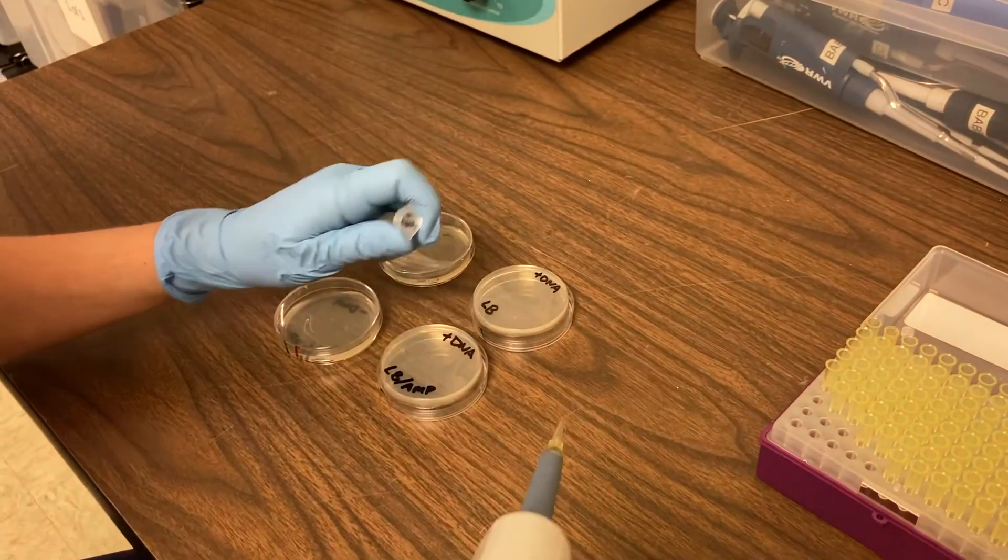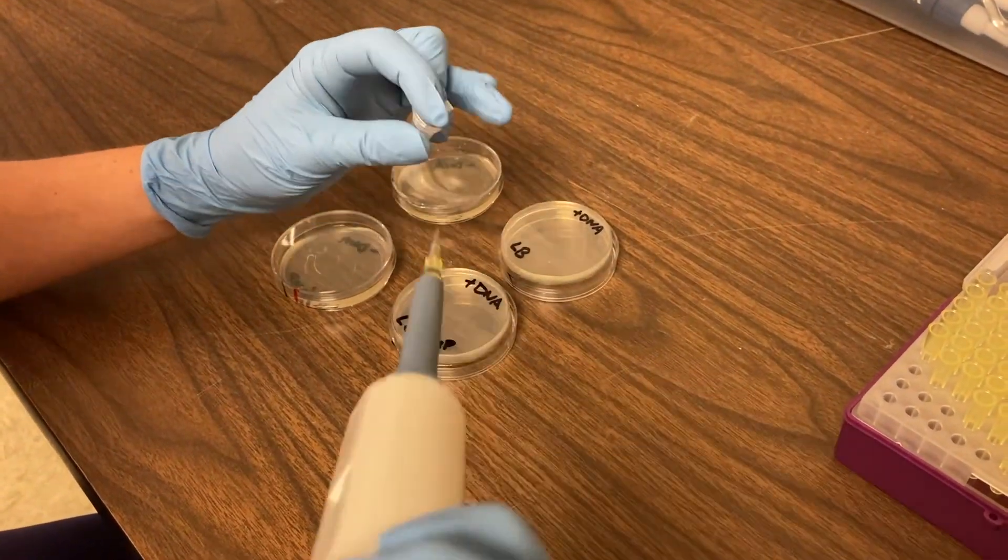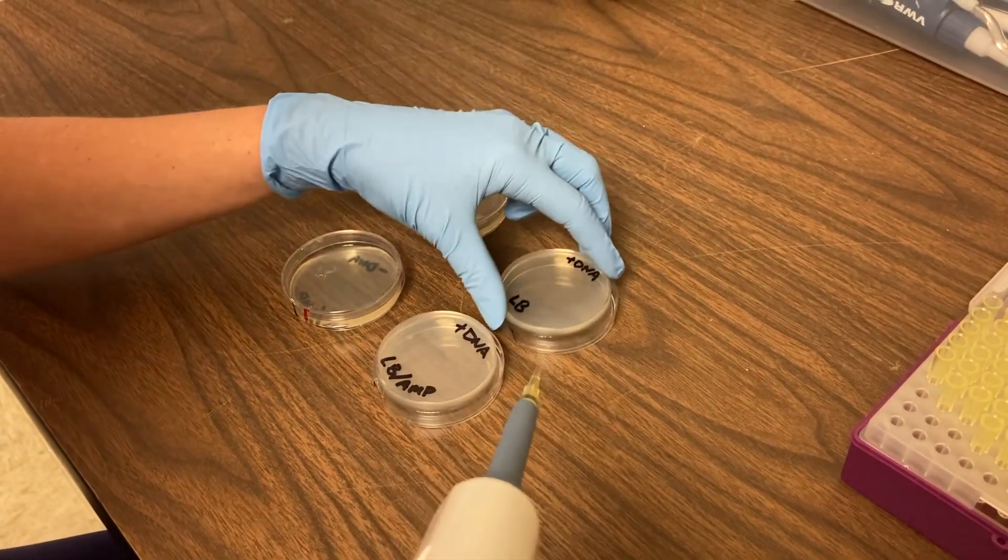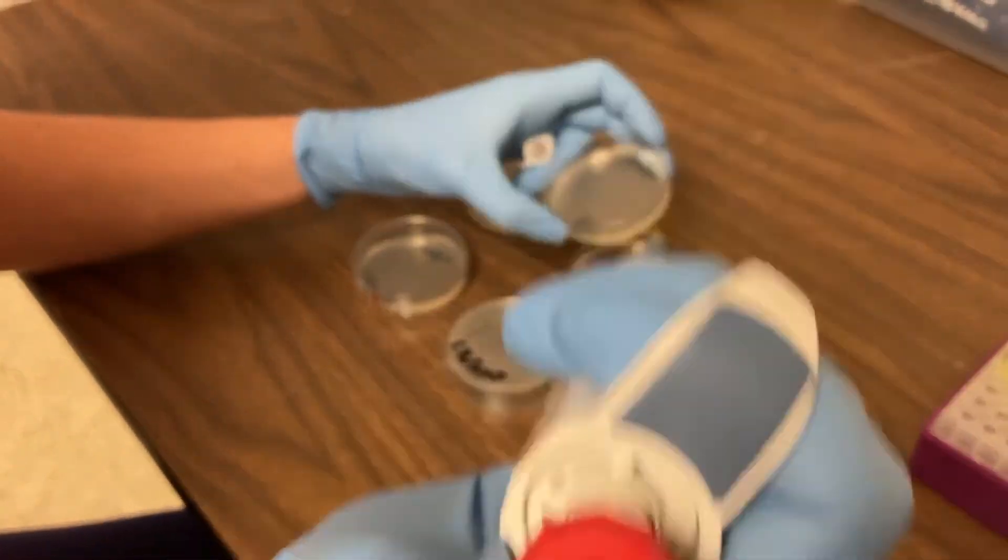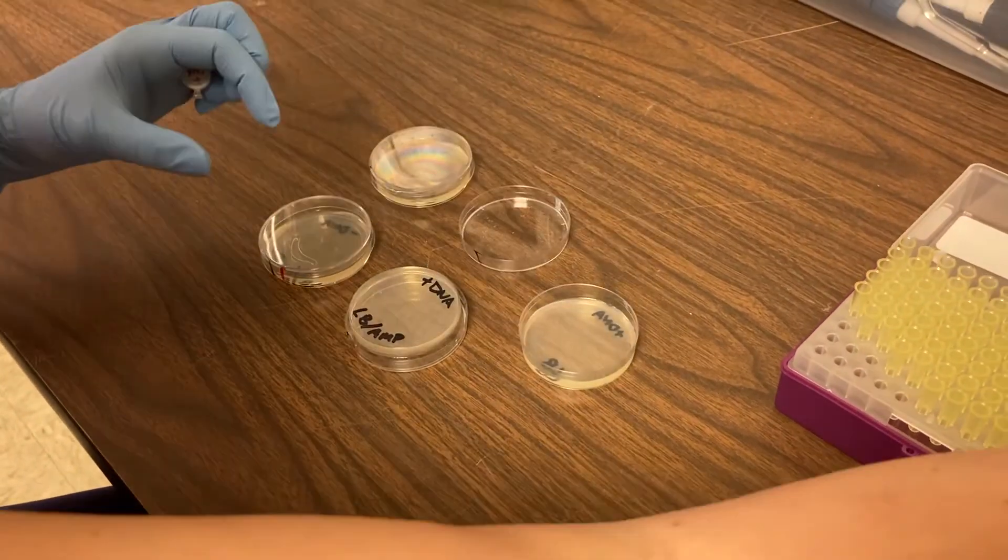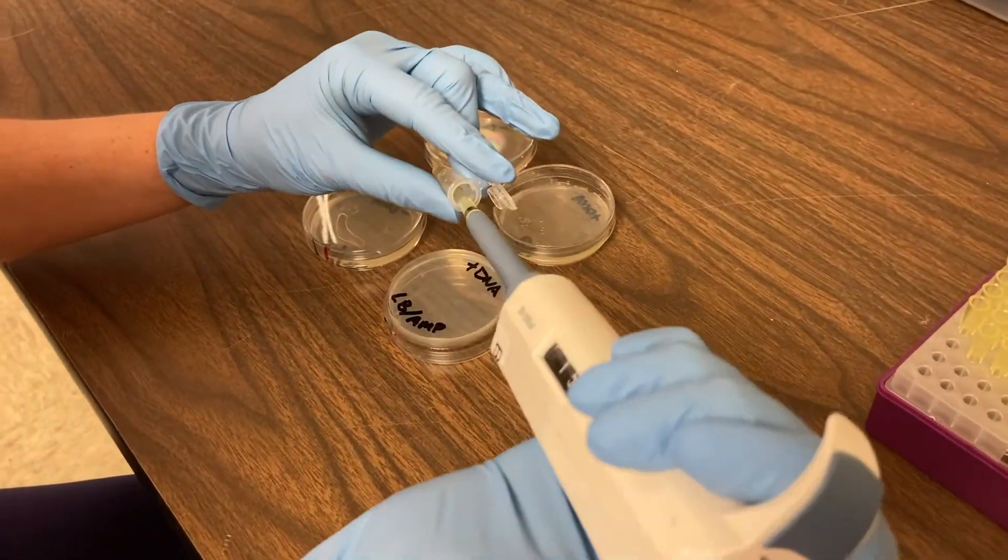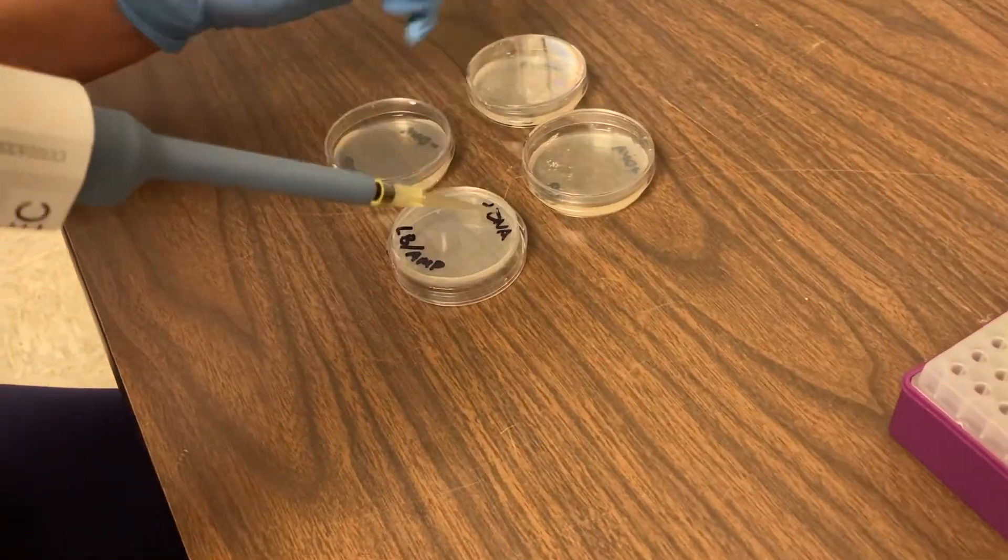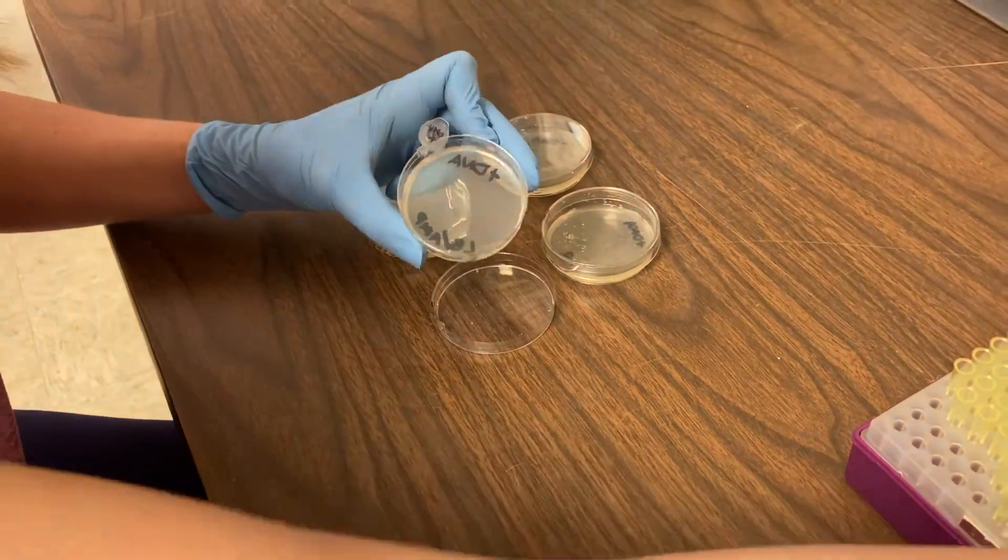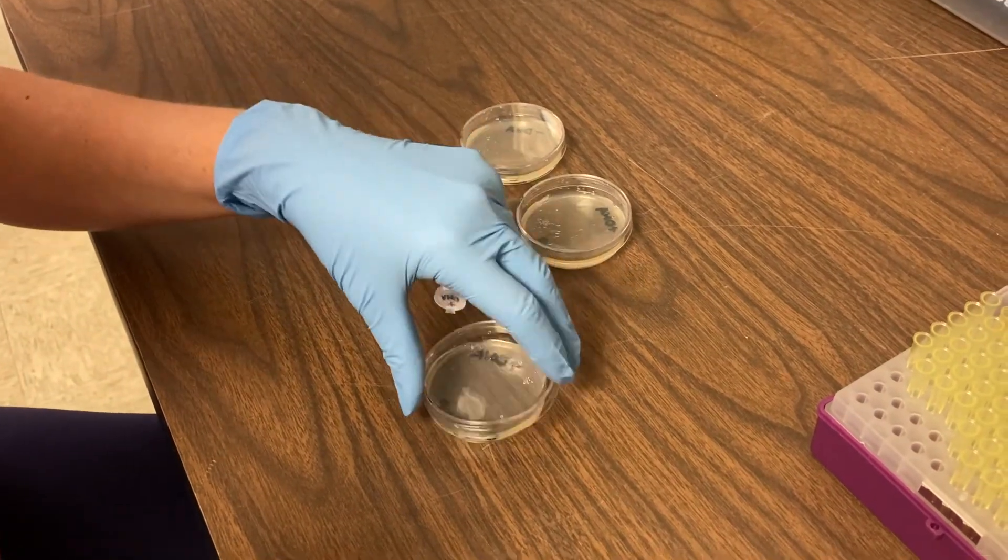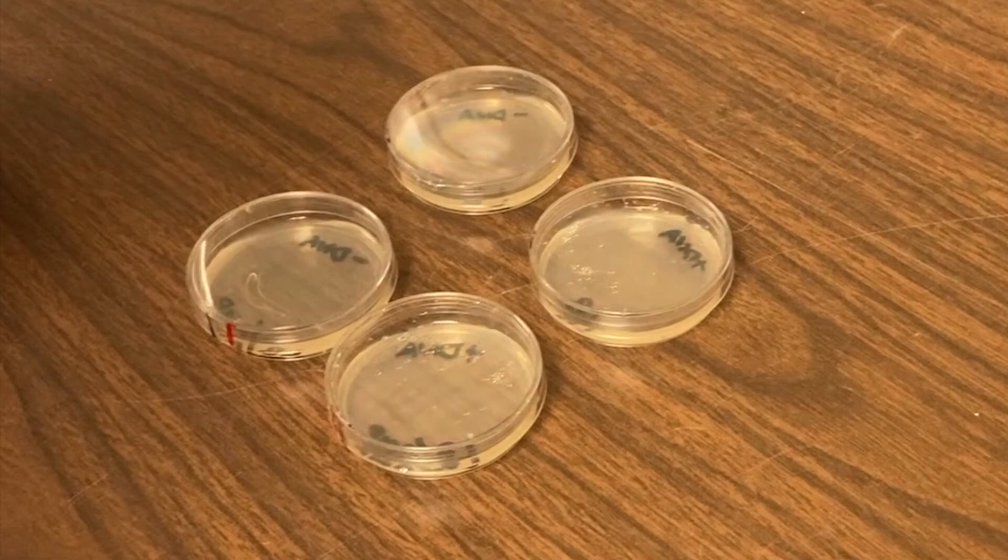We'll then switch our tips and grab the bacteria that is the plus DNA bacteria. This is the bacteria that did receive the plasmid. So we're going to speed this up for you a little bit. Now just a reminder that first plate only has LB in it, just the sugars that bacteria would need to grow. Now in the second plate, again, we have LB, but it also includes the antibiotic ampicillin as well.